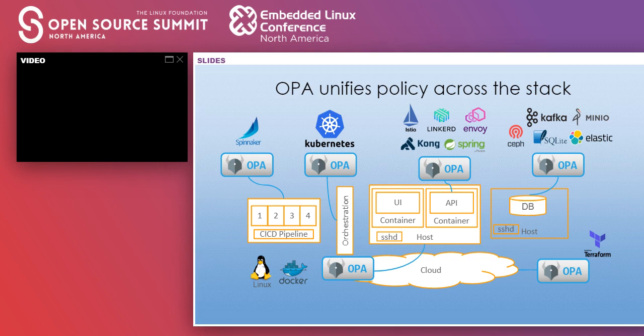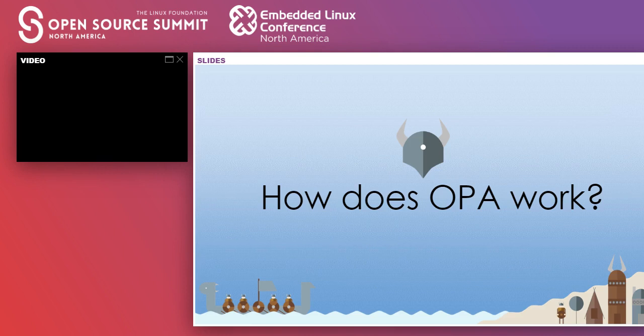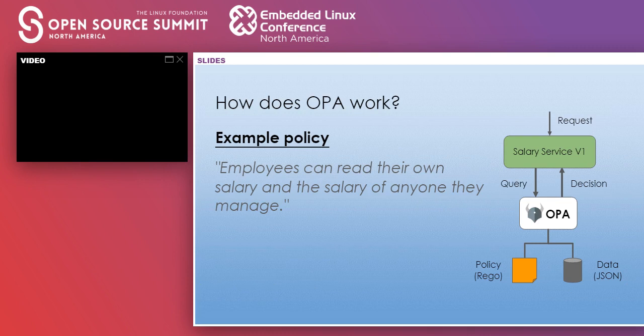The cool thing is you can use any of these integrations out of the box without having to write a single line of code — you can start enforcing policies today using OPA. Now let's look at how OPA actually works. We have a service that gets a request, it asks OPA for a policy decision, and OPA gives a decision based on the policy and data it has access to and sends it back to your service for enforcement.